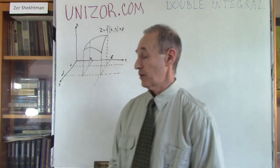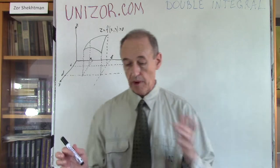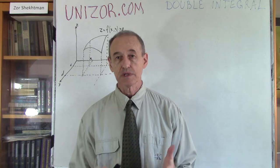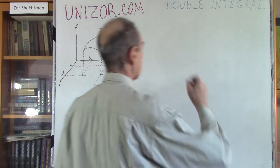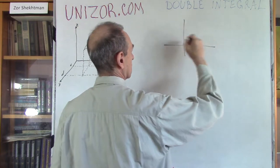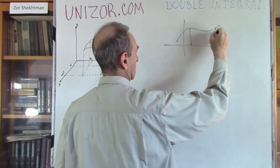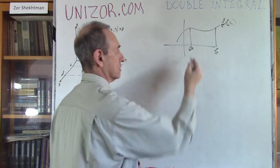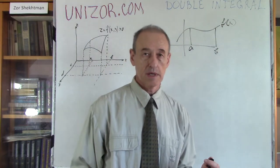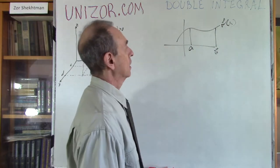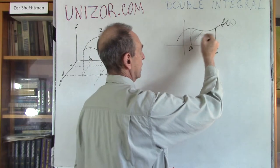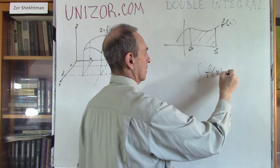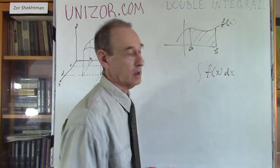If you remember, when we were talking about definite integrals, we basically introduced the concept of area under the curve. So if our function is defined on a segment AB, then this area under the curve is basically an integral from A to B.